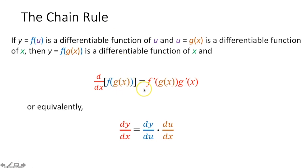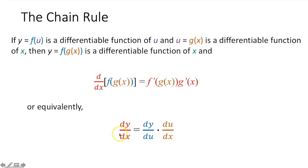Again, I just want to make sure you got this. You are taking the derivative of the outer function, leaving the inner function in there, then multiplying that whole thing by the derivative of your inner function — which is exactly what this is saying. If you want the derivative of your function, it's equal to the derivative of your outermost function times the derivative of your innermost function.